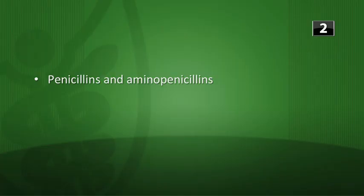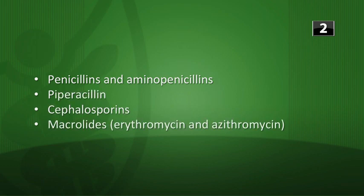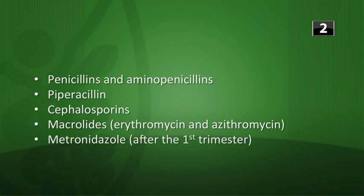Which antibiotics are safe during pregnancy? All the penicillins and aminopenicillins, also piperacillin and cephalosporins. Macrolides — specifically erythromycin and azithromycin — are safe. Metronidazole is safe after the first trimester, and nitrofurantoin can be used commonly for UTI treatment as well.